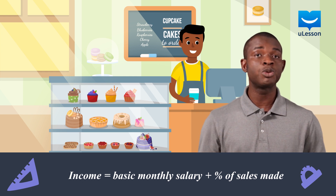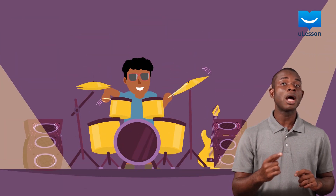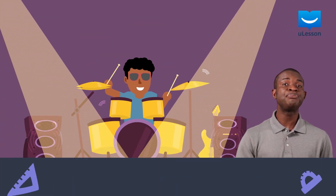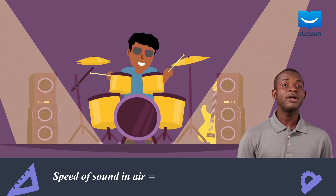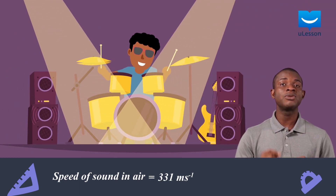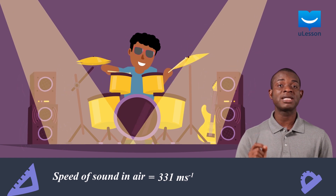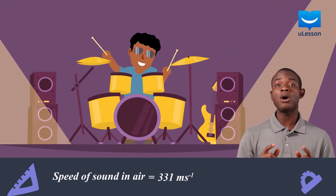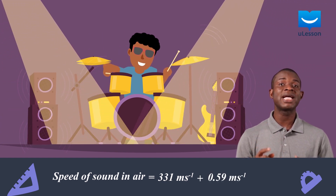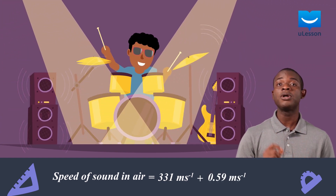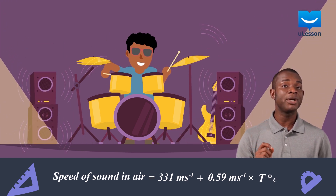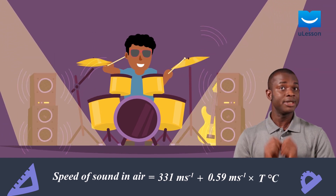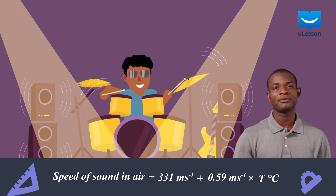It can also come to play when calculating the speed of sound in air. This is given as 331 meters per second plus 0.59 meters per second for every increase in temperature in degrees Celsius above zero.